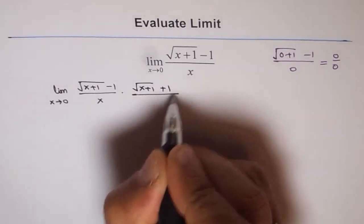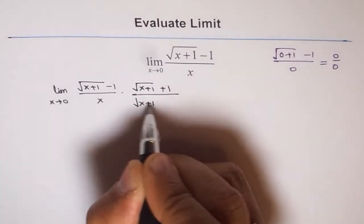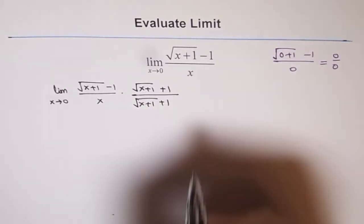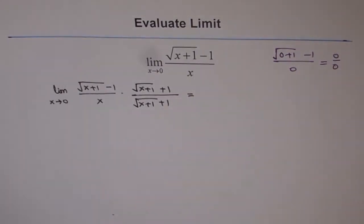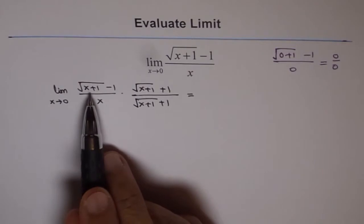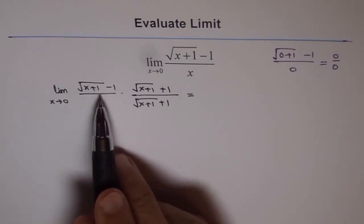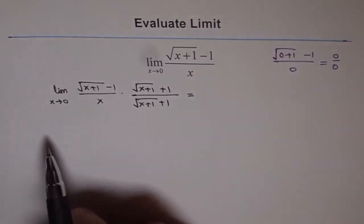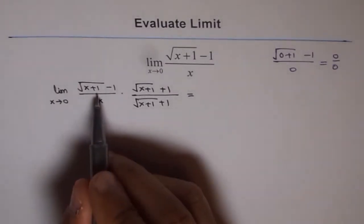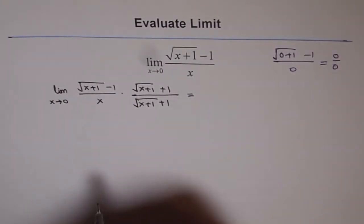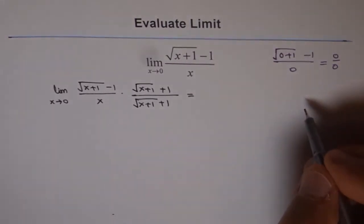We multiply and divide by square root of x plus 1 plus 1. Why do we do so? We do it because it helps us to get rid of the square root and simplify it. You know that a plus b times a minus b is a squared minus b squared.